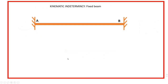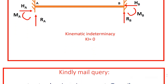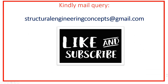For the fixed beam, both supports are fixed supports, which have no degree of freedom because they can resist all three reactions. So the kinematic indeterminacy of a fixed beam is zero. The degree of freedom of a fixed beam is zero.